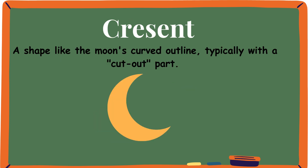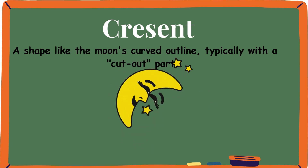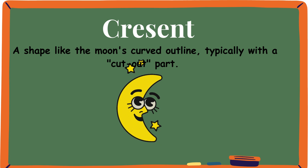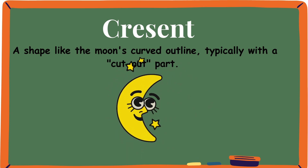Crescent. A shape like the moon's curved outline, typically with a cut-out part. Imagine you have a circle, use a cookie cutter and chop off a little tiny circle — there you go. Look at this moon: a moon is just like a crescent.